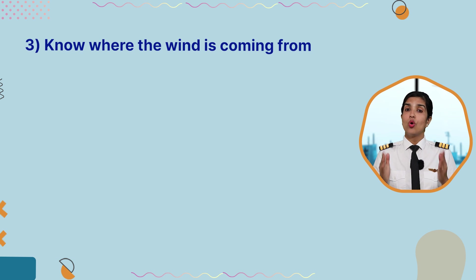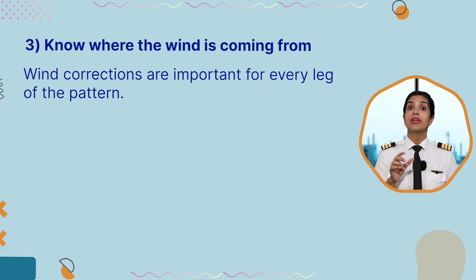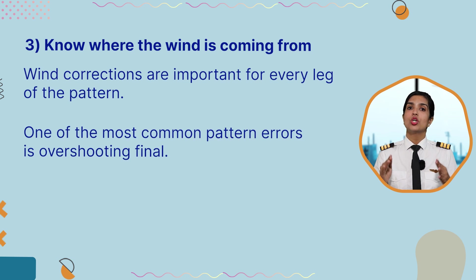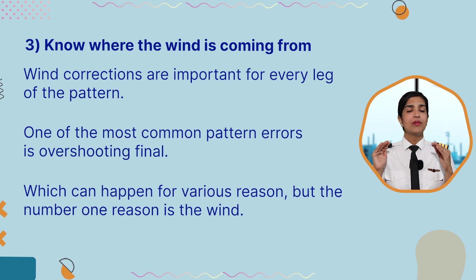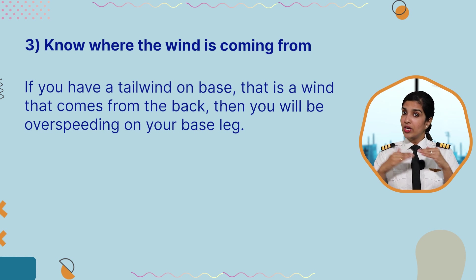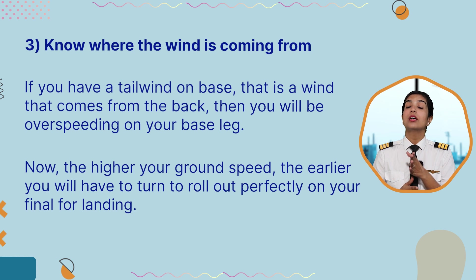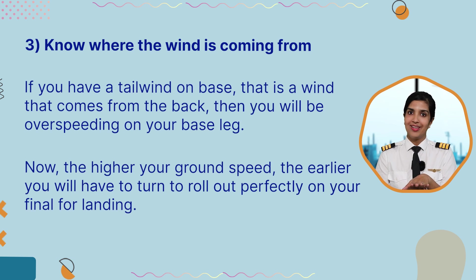The third point is to know where the wind is coming from. Wind correction is important for every leg of your pattern. One of the most common pattern errors is overshooting your finals, which can happen for various reasons, but the number one reason is the wind. If you have a tailwind on the base — a wind that comes from the back — then you will be over-speeding on your base leg. The higher your ground speed, the earlier you will have to turn to roll out perfectly on your finals for landing.